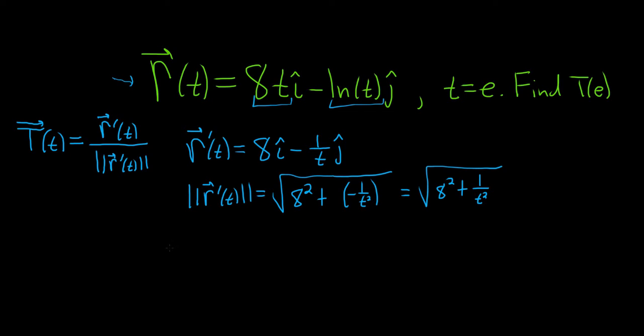All right, so now I suppose we can start plugging in e. So let's go ahead and plug in e into the top piece, r prime. See what that looks like. So that will be 8i hat minus 1 over e j hat. And now let's go ahead and plug it in to this one here. So plugging in e, that gives us the square root of 8 squared plus 1 over e squared.